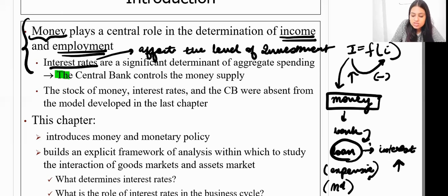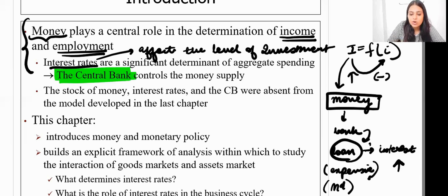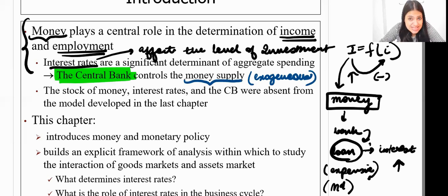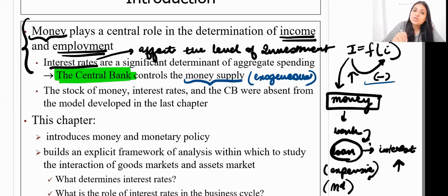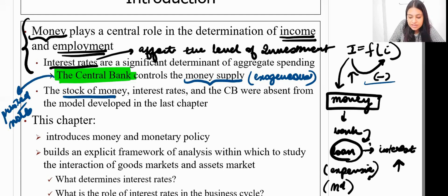Somebody has to supply money, and the central bank controls the supply of money. It is the central bank that determines how much money is printed in the economy. Once this money is supplied, I assume it as an exogenous factor — not determined inside my model, a fixed value. Whatever happens to interest rate, the money supply is controlled by the central bank, which always supplies a fixed amount of printed notes. The stock of money, the interest rate, and the central bank were all absent from the model in the last chapter.